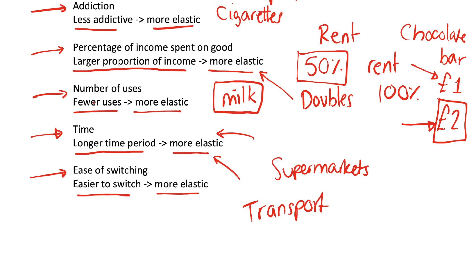However, let's consider a year from now, if the prices of trains are still really high, you might have bought a car to switch away from the high train prices, or maybe you bought a bike. Maybe you've come up with some other way of getting to work. So this longer time period makes everyone more elastic because they can find different ways to do things.